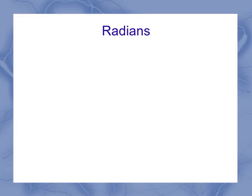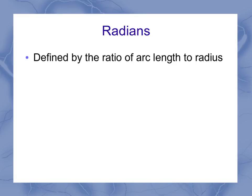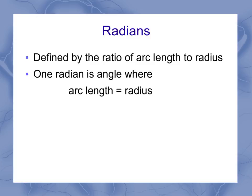Then we get to radians. Radians is another unit that we can use for angular measurements, but it's a little bit different. It's defined by the ratio of the arc length to the radius. In particular, 1 radian is the angle where the arc length equals the radius. And this is going to need a diagram to explain.